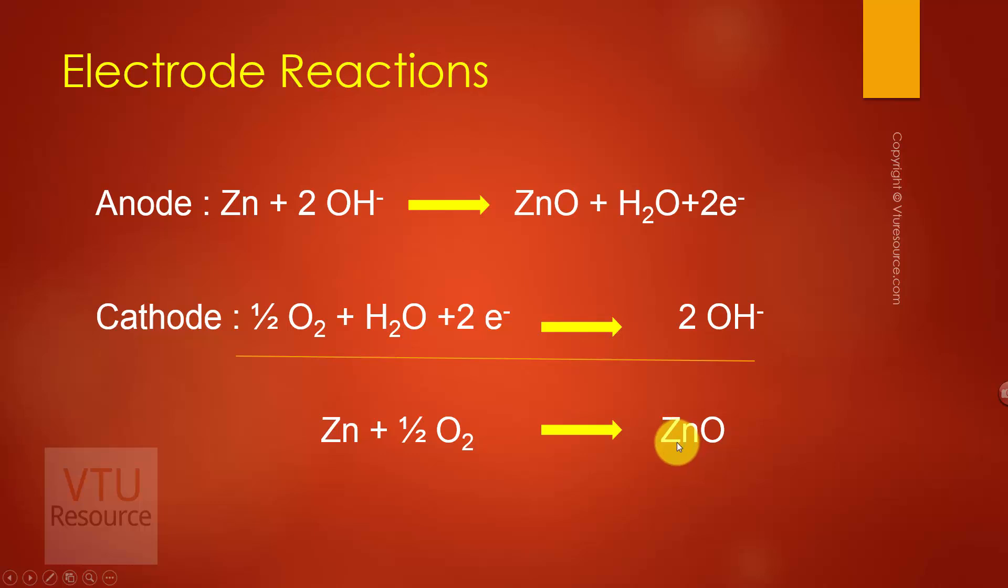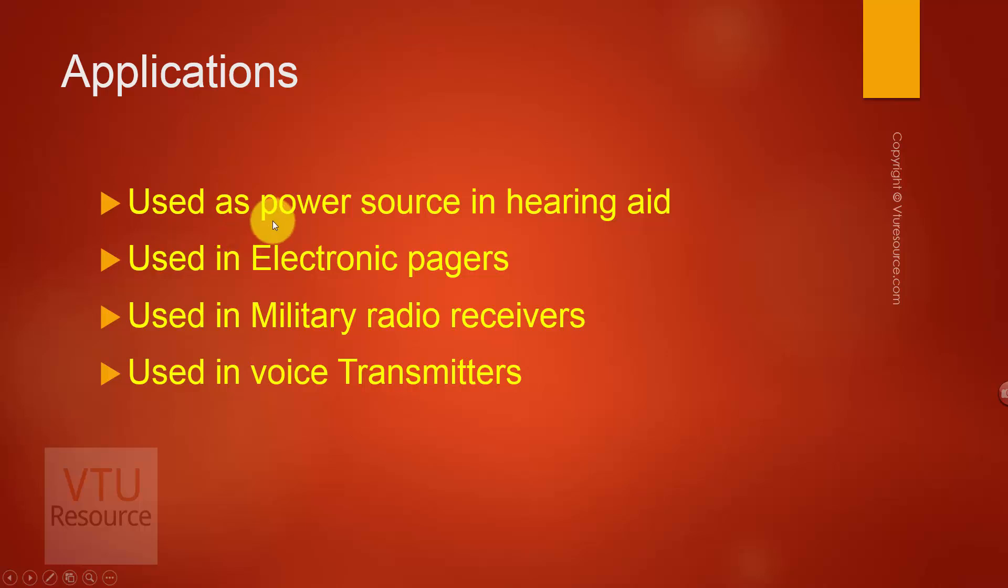Let us discuss few of the applications of zinc air battery. Zinc air battery is used as a main power source in hearing aids. This is because of the size of the battery. It is used in electronic pagers. So pagers were main communication source before mobiles existed. It is also used in military radio receivers and also used in voice transmitters.